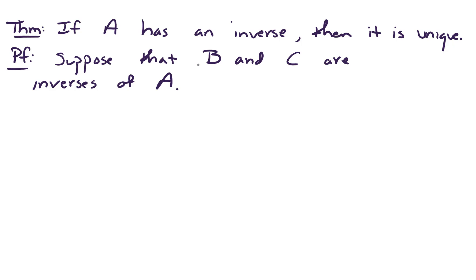Suppose that B and C are inverses of A. This means that AB equals BA equals the n by n identity matrix. And similarly, since C is the inverse of A, it's also true that AC equals CA equals the n by n identity matrix.